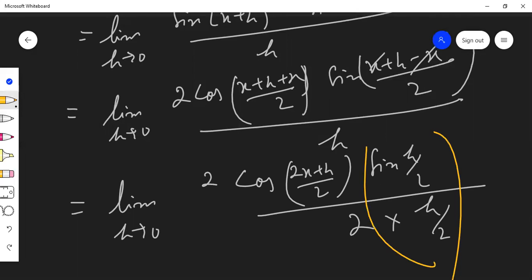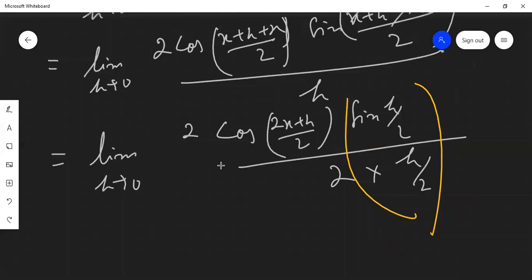What happens here? This is sin theta by theta, which means 1. And we'll do the rest, and in the rest we will equal to 0.